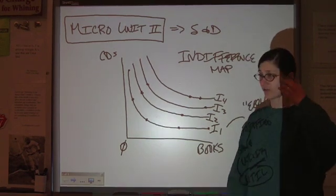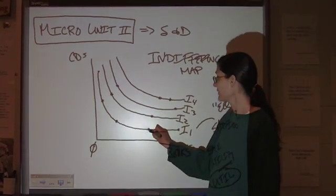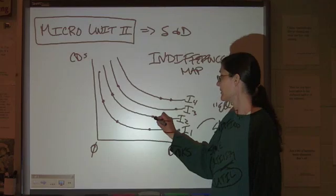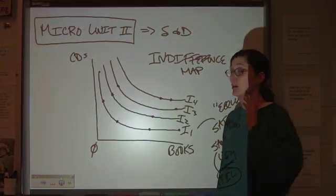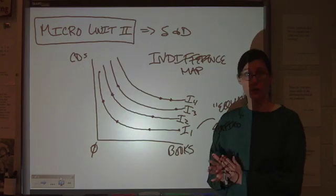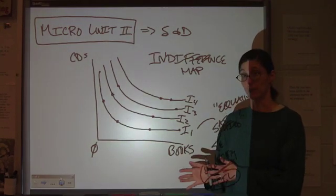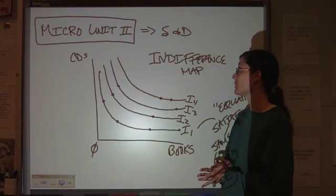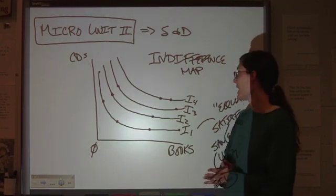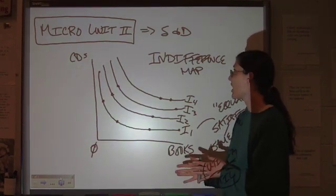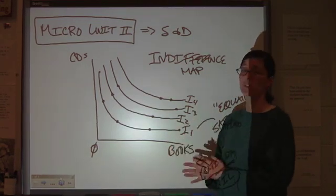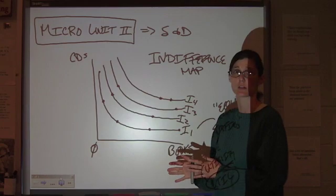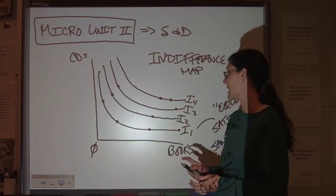Now, how do we get from, I would be equally happy between this point and this point, but I'd rather be here, to the idea of a demand curve? Well, the next thing that we have to do here is add in a budget line. Let's say, for example, that a CD costs twice as much as a book, for the purposes of putting this together. Your average CD probably costs as much as two of your cheap paperbacks.